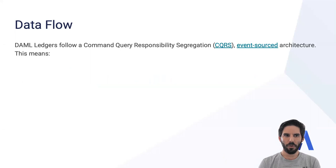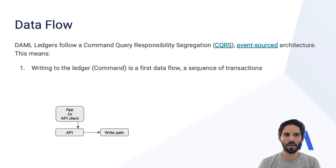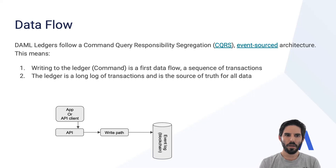We'll start with the data flow. Demo ledgers follow two architectural patterns: command query responsibility segregation, or CQRS, and event sourced. No need to understand that — it's a mouthful, but you can click the links if you want to learn more. Writing to the ledger, what is called a command, is a first data flow — essentially a sequence or stream of transactions going into the ledger. The ledger itself persisting to the ledger is a long log of transactions, and that's the source of truth for all data in the system.